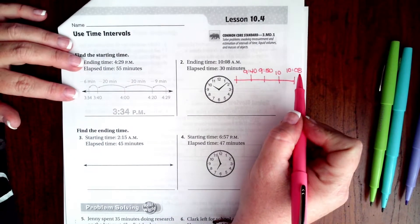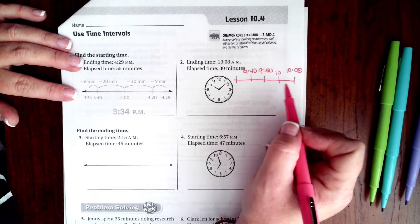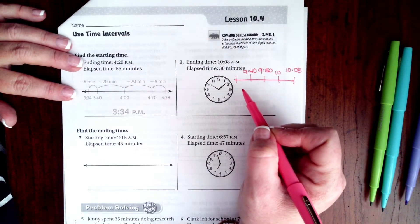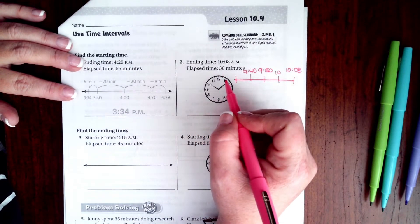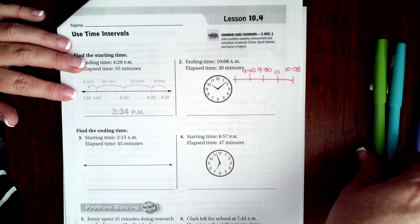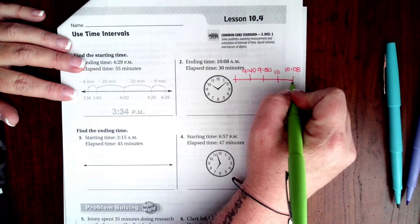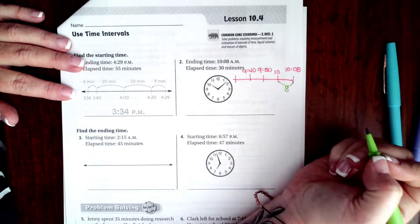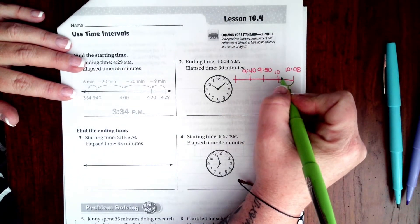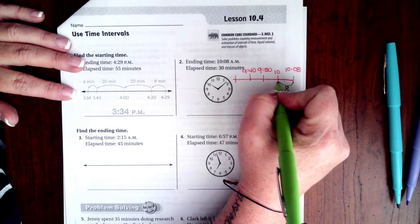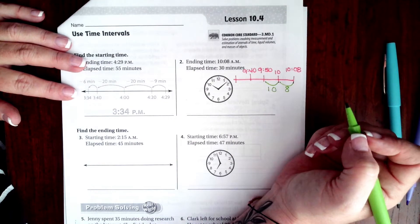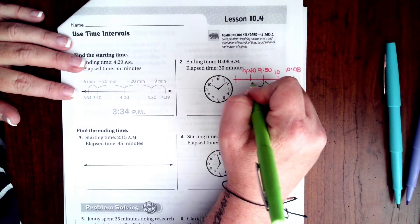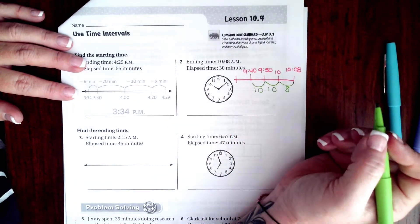I started at 10:08 over on this side because I'm going to go backwards and see where I land. So basically, I need to go backwards 30 minutes. This one's 8 minutes from 10:08 to 10. Then I have another 10 minutes to get to 9:50. Then I have another 10 minutes to get to 9:40.